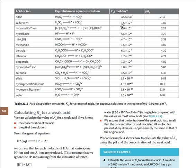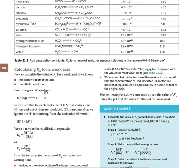Sulfuric acid can behave as a weak acid when producing its second ionization. For sulfurous acid there is a corresponding Ka. We previously showed that when the concentration of hydrogen ion equals the conjugate base, [H⁺]² divided by the acid concentration equals Ka. From that you can calculate [H⁺]. Let's see an example.